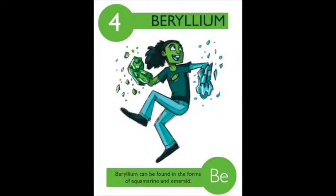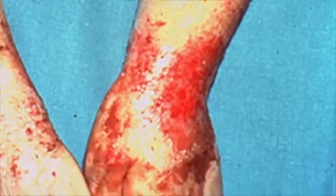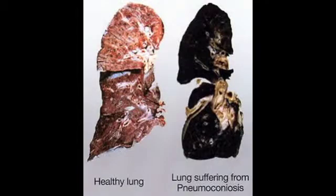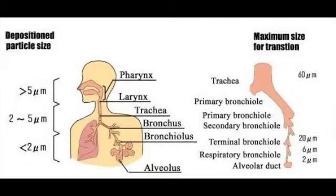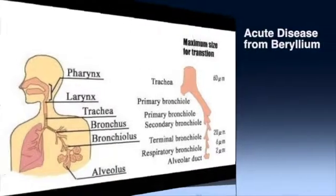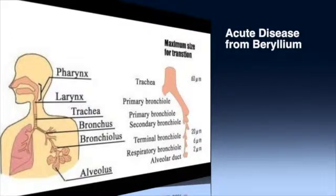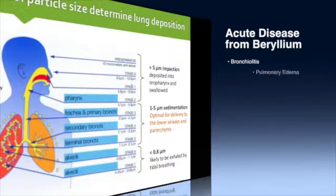Skin exposure to beryllium may cause contact dermatitis, subacute granulomatous nodules, ulceration, and delayed wound healing. Lung disease is the most common and the most concerning. In acute disease, high levels of beryllium exposure can result in inflammation of the upper and lower respiratory tract and airways, causing bronchiolitis, pulmonary edema, and chemical pneumonitis.